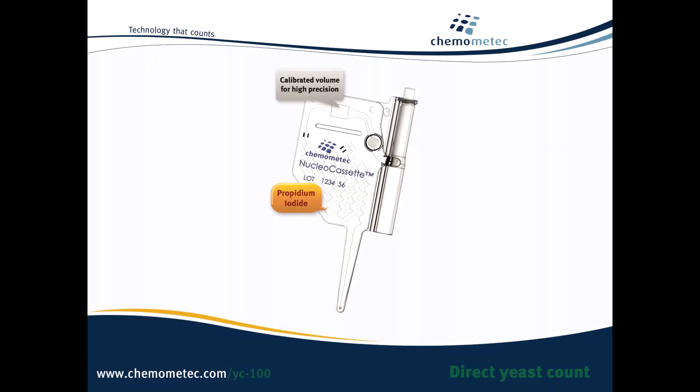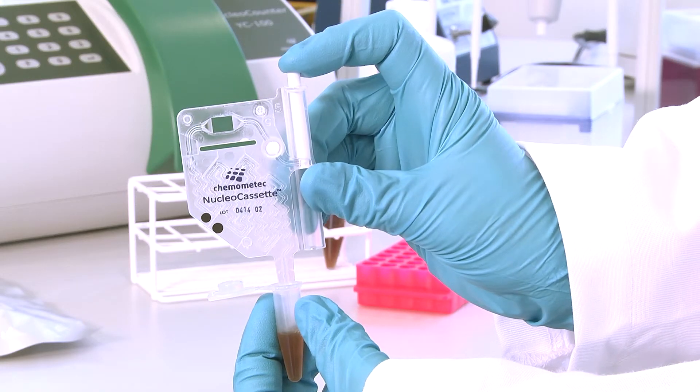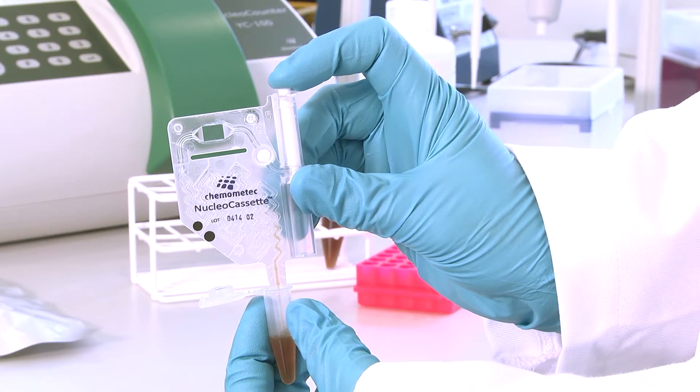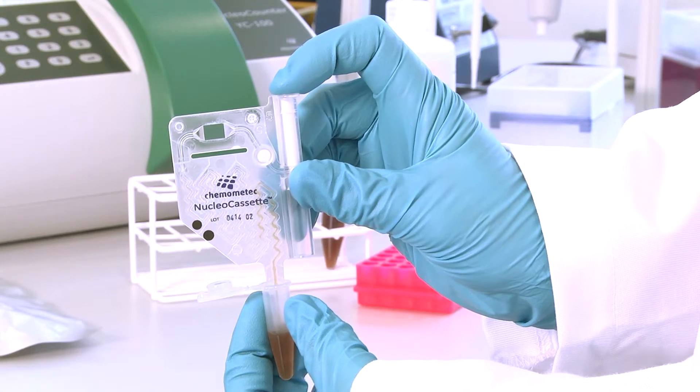The secret is the nucleocassette. It contains the dye that stains the DNA of the yeast cells. The volume is pre-calibrated, eliminating human subjectivity, and everything is self-contained so there is no exposure to hazardous materials.